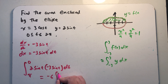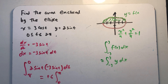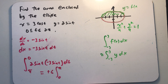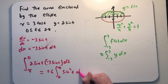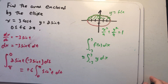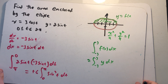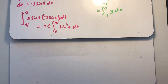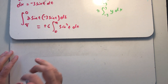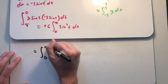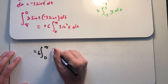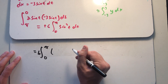I'd rather integrate from 0 to π, and when I change the order of integration I change the sign, making it positive 6. So I have the integral from 0 to π of 6 sine squared t dt.